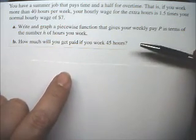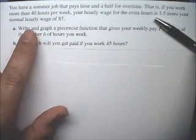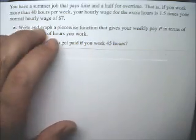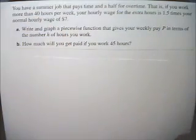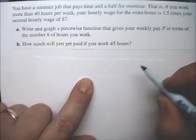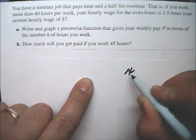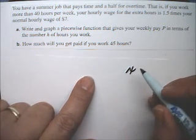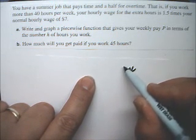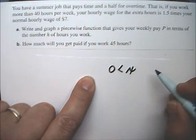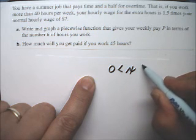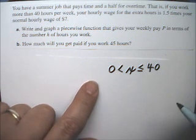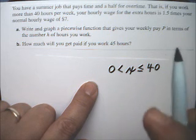That means hours will correspond to X, and dollars correspond to Y. With that in mind, it's the X that we're going to break up into the pieces. I'm going to write X, thinking of it as the middle of a double inequality: X greater than 0 and X less than or equal to 40. That's the first piece — that's your regular pay.